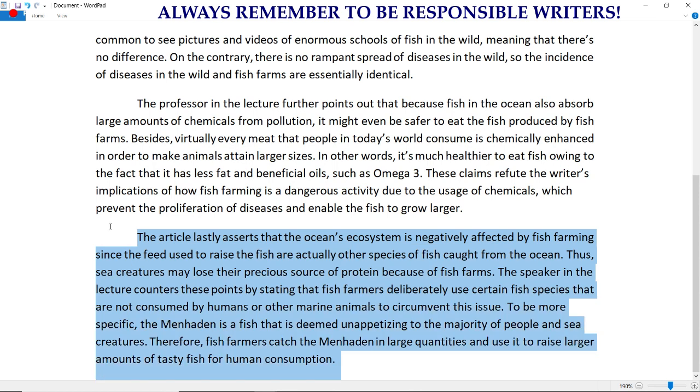The article lastly asserts that the ocean's ecosystem is negatively affected by fish farming, since the feed used to raise the fish are actually other species of fish caught from the ocean. Thus, sea creatures may lose their precious source of protein because of fish farms. The speaker in the lecture counters these points by stating that fish farmers deliberately use certain fish species that are not consumed by humans or other marine animals to circumvent this issue—circumvent means avoid. To be more specific, the menhaden is a fish that is deemed unappetizing to the majority of people and sea creatures. Therefore, fish farmers catch the menhaden in large quantities and use it to raise larger amounts of tasty fish for human consumption.